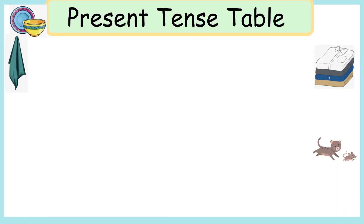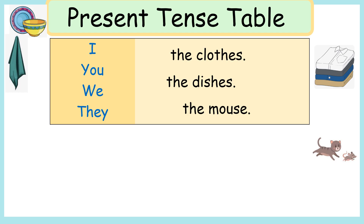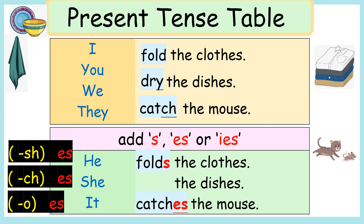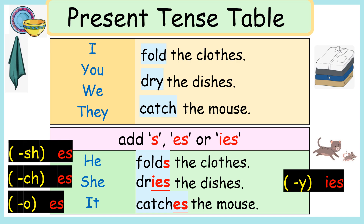Look at this present tense table. We can see the rule here. After I, you, we, they, we use the base forms of the verb. But after he, she, it, in many cases we add S. For verbs ending in SH, CH, and O, we add ES. For verbs ending in Y, we turn Y into I and then add ES. I like this table — it is useful.